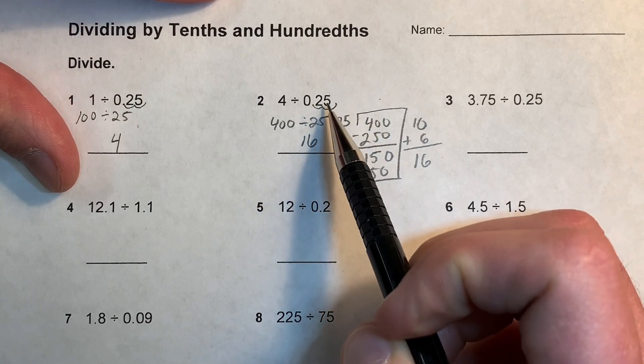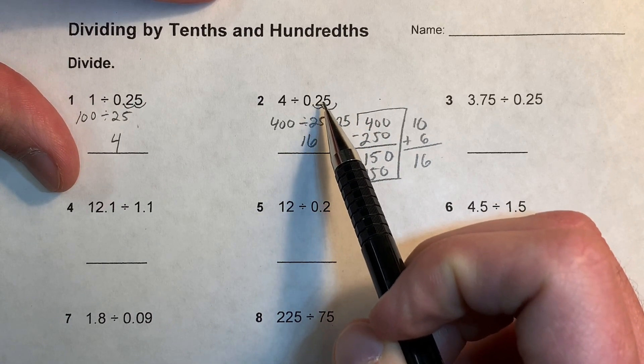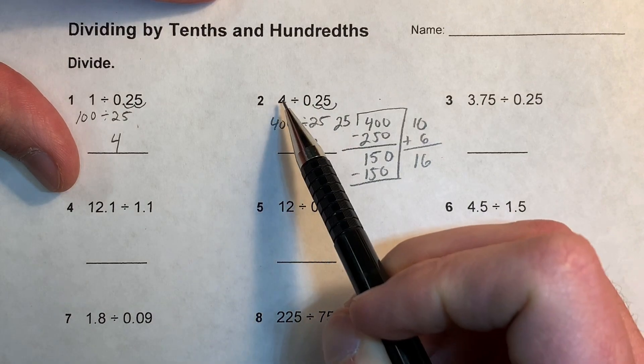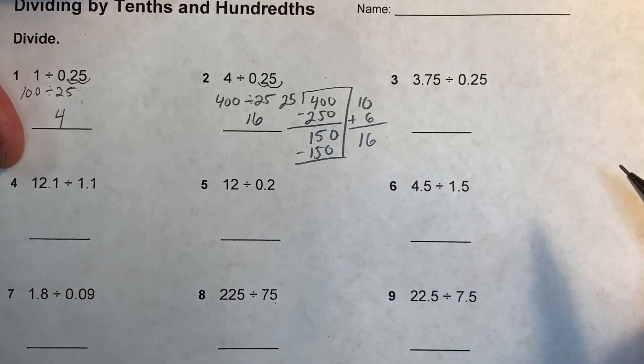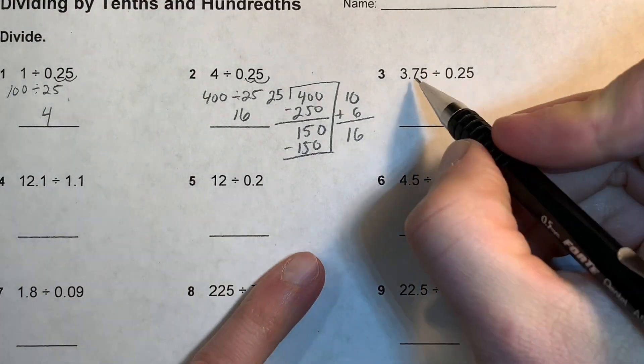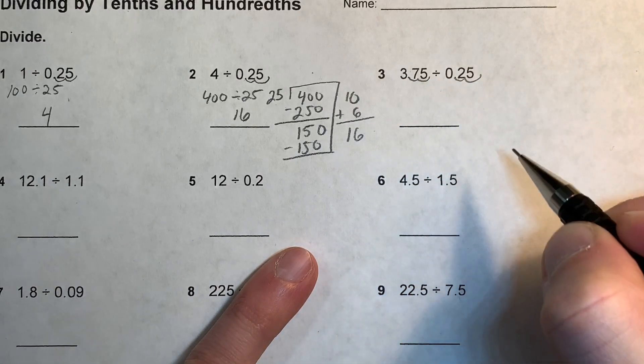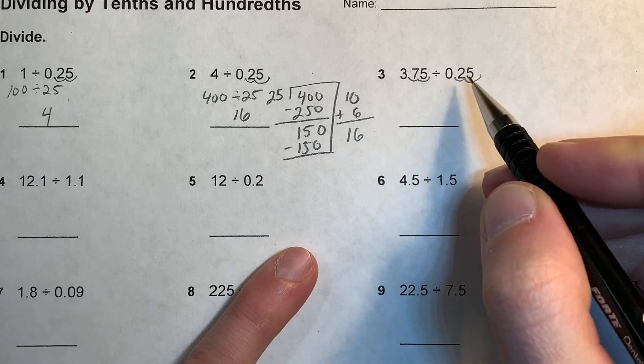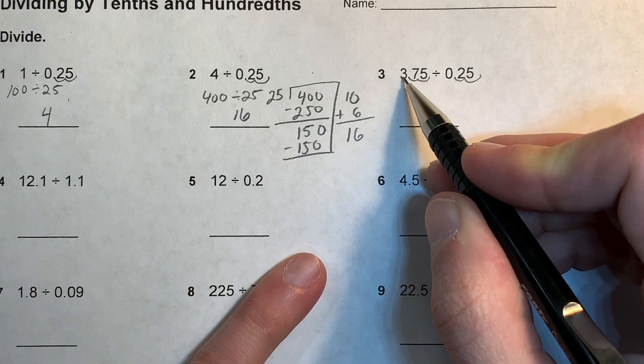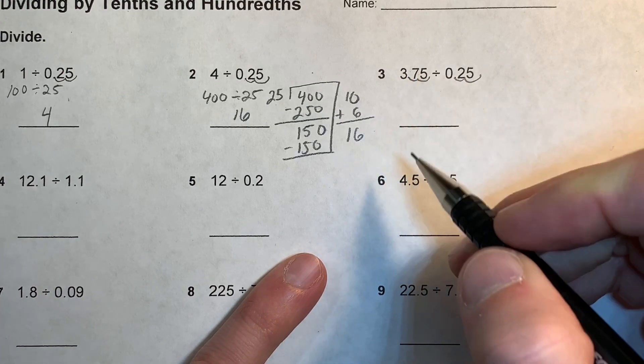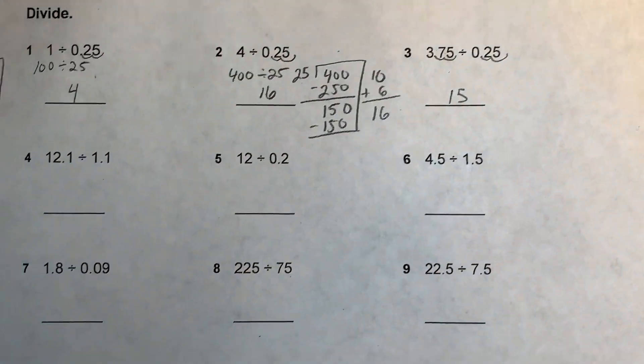Then I add my partial quotients together and I get 16. You can also do this in your head if you know that since this is essentially quarters, four quarters equals a dollar, four times four is 16, so 16 quarters. Over here we're going to multiply both by a hundred. Same thing, we know that there's four quarters, so four times three is 12, plus these three, so it'd be 15.